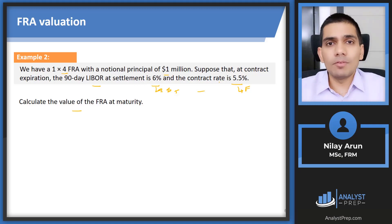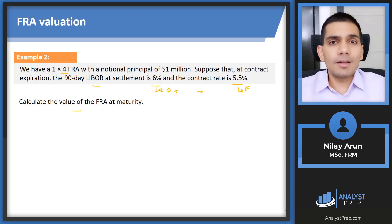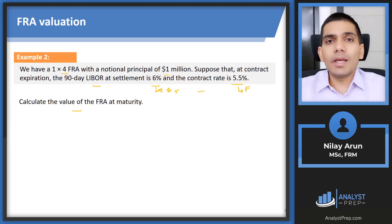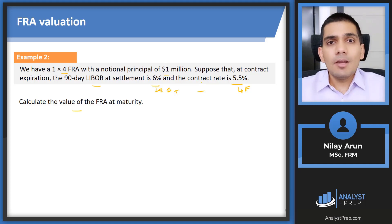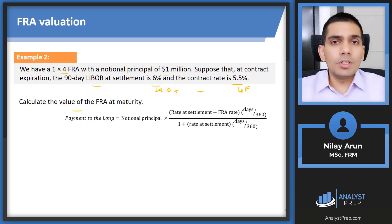This 0.5% does not occur when the FRA expires — it occurs at the end of the theoretical loan period. So we need to discount it back to the FRA expiration. Also, 6% and 5.5% are annualized rates, but the loan period is not one year, so we must de-annualize them. The formula is: notional principal × (rate at settlement − FRA rate) × (days/360), all divided by (1 + rate at settlement × days/360).